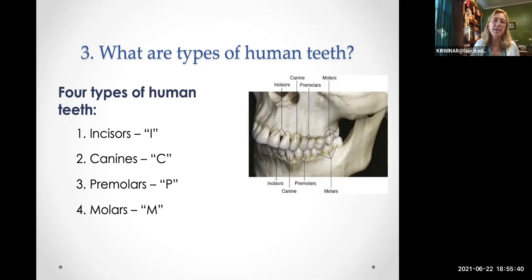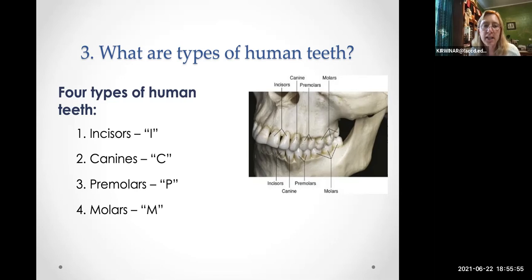There are four types of human teeth: incisors, canines, premolars, and molars. Each type is given a letter code — I for incisors, C for canines, P for premolars, M for molars. On the lecture slide you see the location of each, showing only one half of the top row and one half of the bottom row — each half being a quadrant.